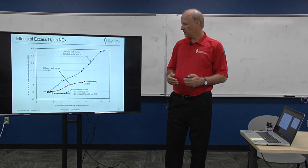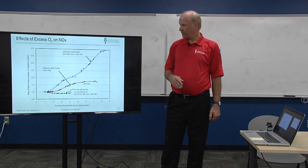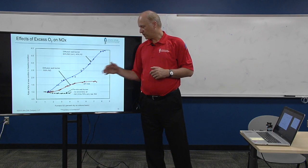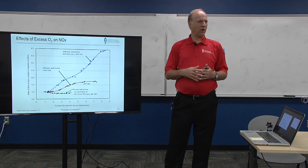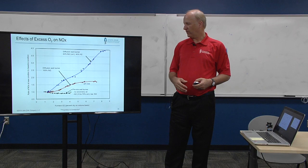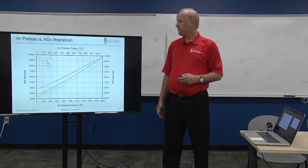This is a curve from API Standard 535 showing excess air or excess O2 effects on NOx. The main point is that API has a generic curve in their standard, but real burners could be worse or better than that — so be careful about using a generic curve, as it's very dependent on conditions and the kind of burner you have.